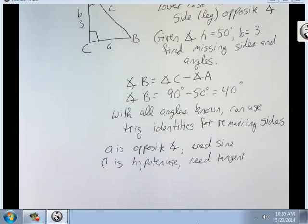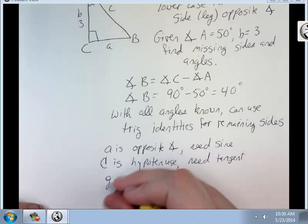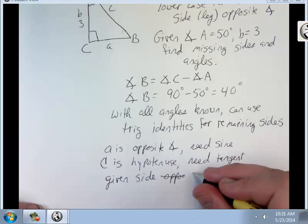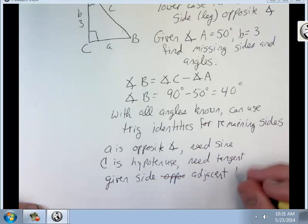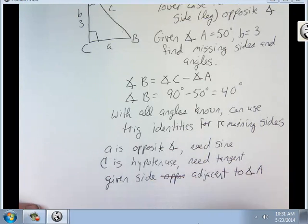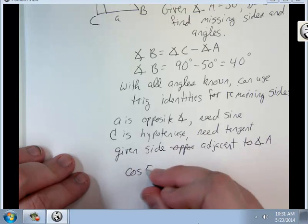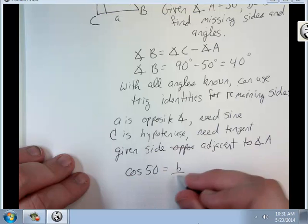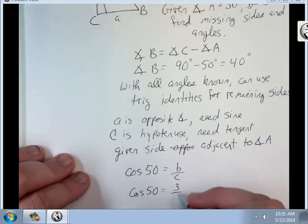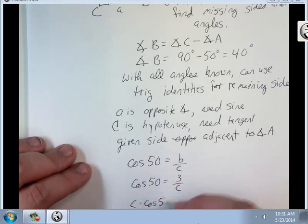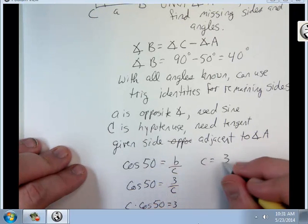I wonder what I could be missing. I'm given the side adjacent to angle A. Alright, so I'm given the adjacent to A, so I can use cosine of 50 equals B over C. Cosine of 50 equals 3 over C. C times the cosine of 50 equals 3. C will be 3 over cosine 50. Now I can evaluate it.